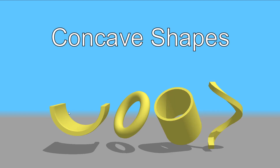Here are some more examples of concave shapes. We have the half ring, a torus, a tube, and a helix. From looking at a torus and a tube we can see one way we can tell if a shape is concave — both of them have a hole that goes through them. So any object or shape that has holes in it has a concave shape.